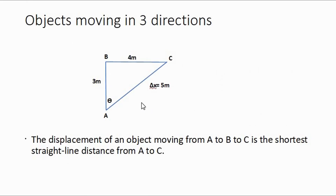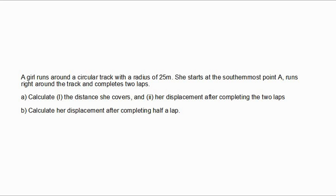Hence, the displacement of an object moving from A to B to C is the shortest straight-line distance from A to C. So our delta x, or our displacement, was five meters. Let's now look at some calculations with distance and displacement that we'll get in our exam papers.